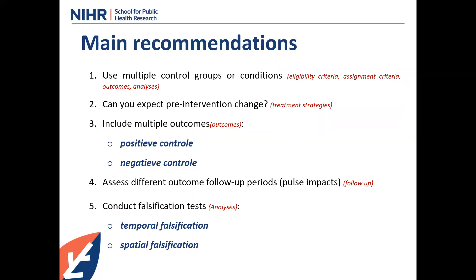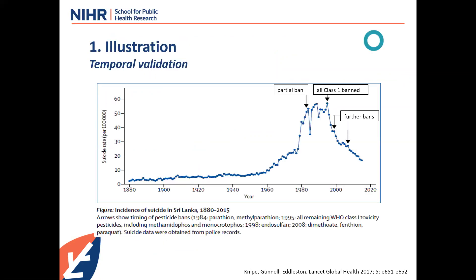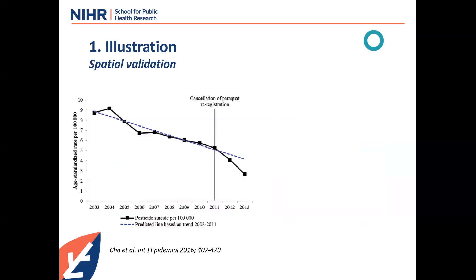Let me illustrate some of these. Here is a study by colleagues about the impact of pesticide exposure in Sri Lanka and suicide. You can see clear dips every time a ban was introduced. Since that happens at different points in time, exactly where you would expect drops in the rate, you can say that makes you more confident there is a causal relation between pesticide exposure and suicide rates. That's temporal validation.